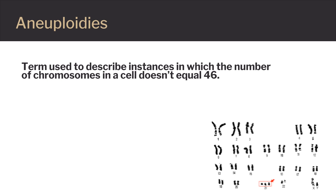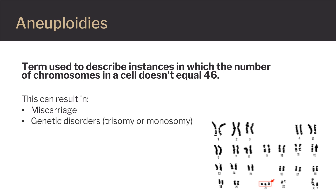Changes in the number of chromosomes from each biological parent can affect the outcome of a pregnancy, most often resulting in a miscarriage. Studies show that aneuploidy affects almost half of pregnancies that end in a miscarriage in the first trimester. An additional or missing chromosome is also a common cause of some genetic disorders.